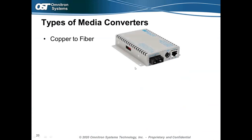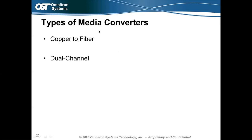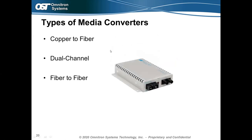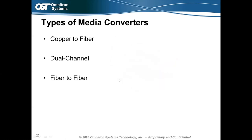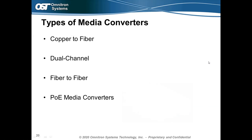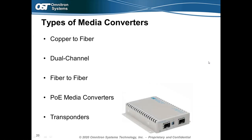The most popular type is copper-to-fiber — this media converter has a fiber port and a copper port and can be managed or unmanaged. Dual-channel media converters feature two fiber ports and two copper ports — like having two media converters in one device. Fiber-to-fiber converters extend fiber networks or convert between multi-mode and single-mode. PoE media converters incorporate PoE functionality to provide power to a device out of the copper port. Transponders are fiber-to-fiber converters with SFP ports supporting single-mode to multi-mode or standard to WDM wavelength conversion.